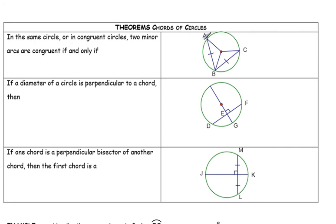they will only be congruent if and only if the chords that form them are congruent to each other. So as you see, chord AB is congruent to BC. So they form arc AB, which would be congruent to arc CB.